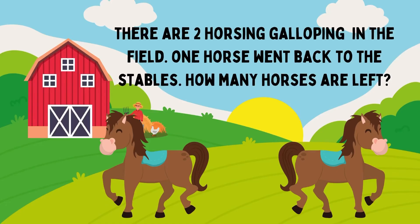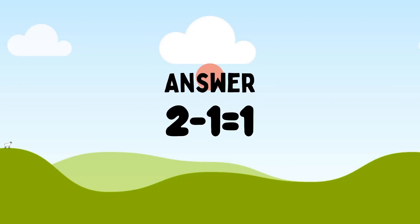Next one. There are 2 horses galloping in the field. 1 horse went back to the stable. How many horses are left? So, 2 horses in total. 1 left. 2 minus 1 is equal to 1. So, 1 horse left in the field.